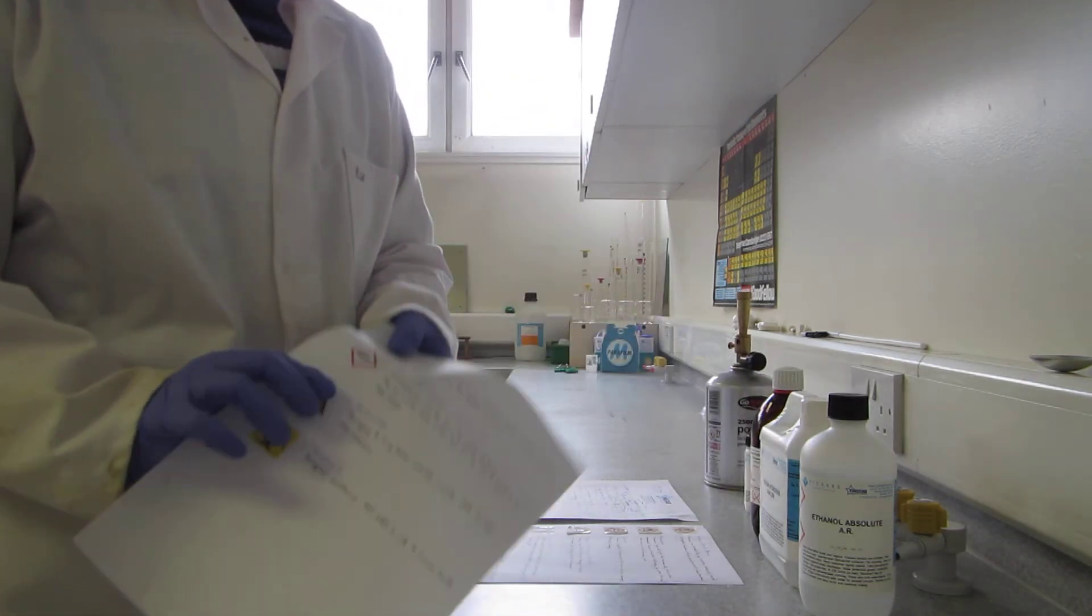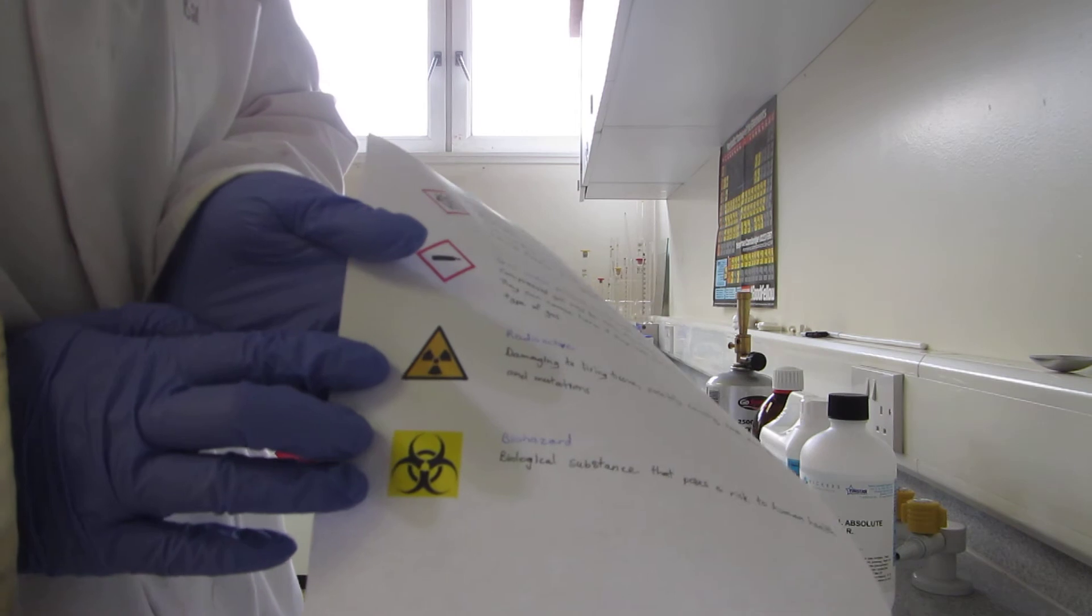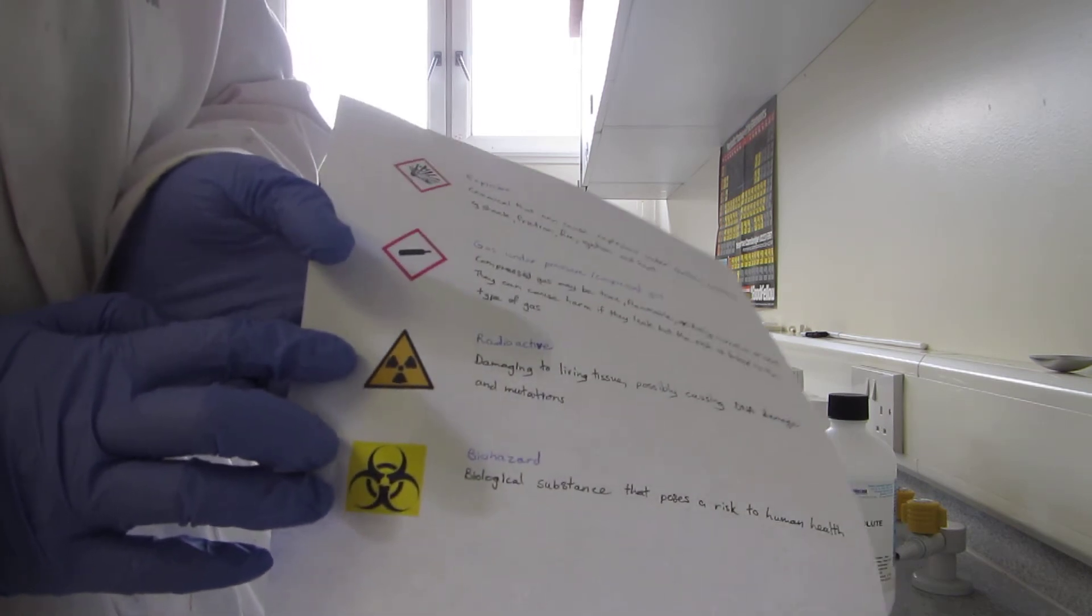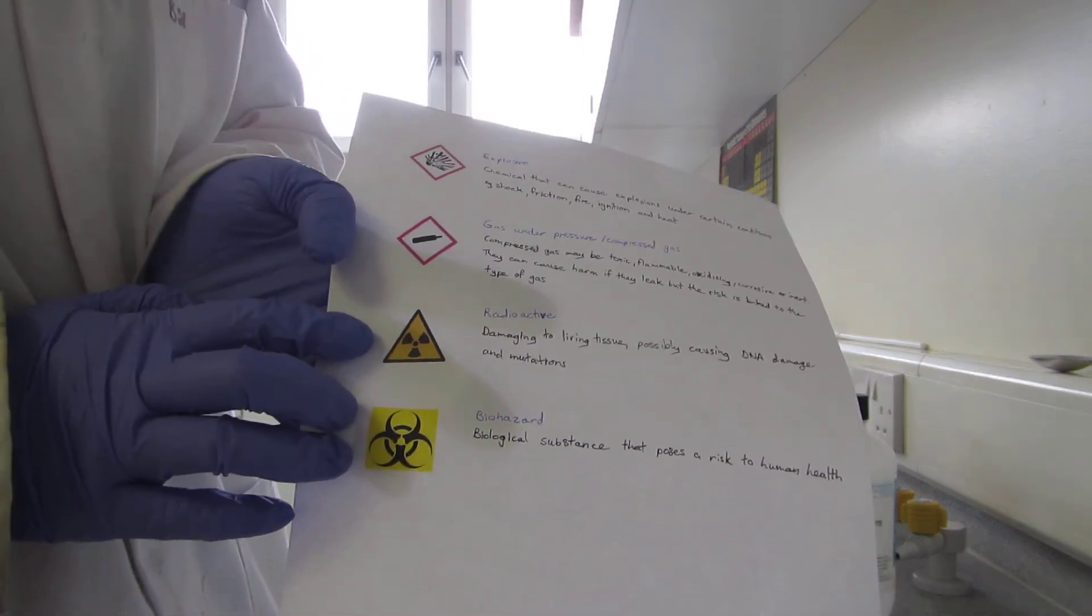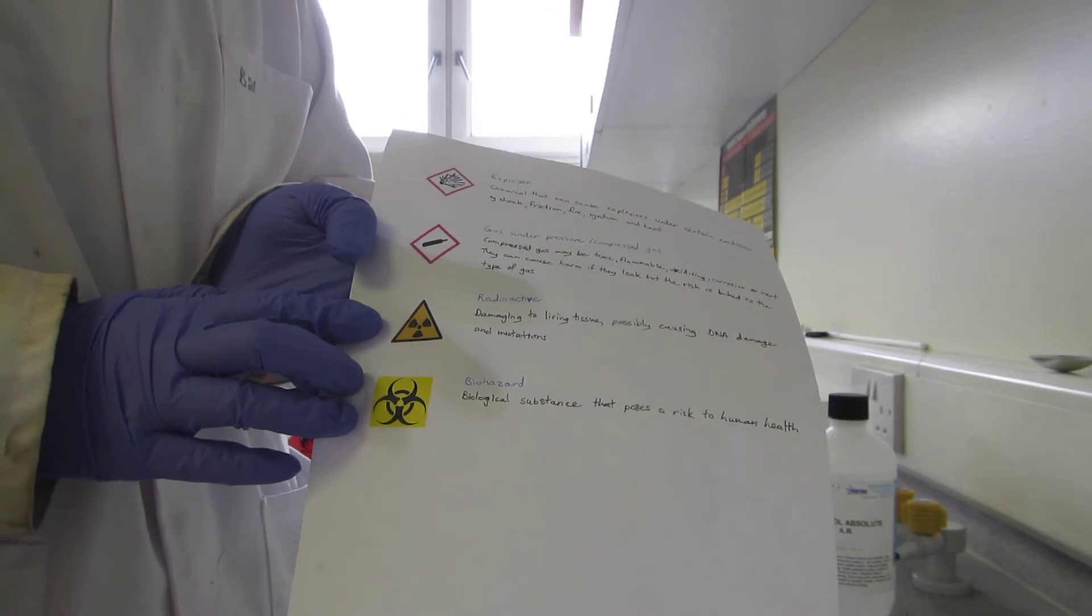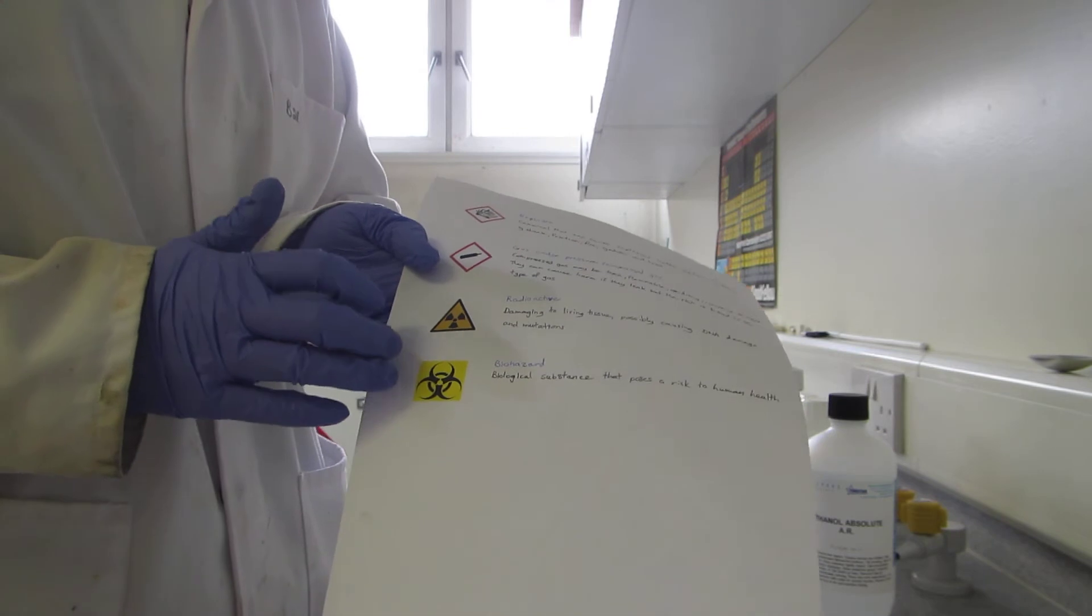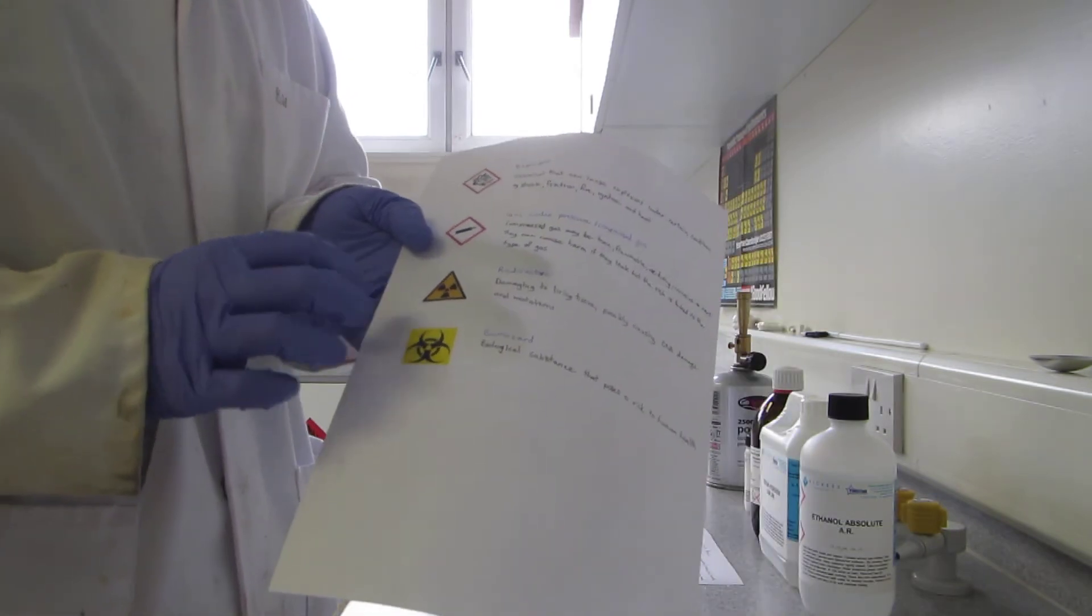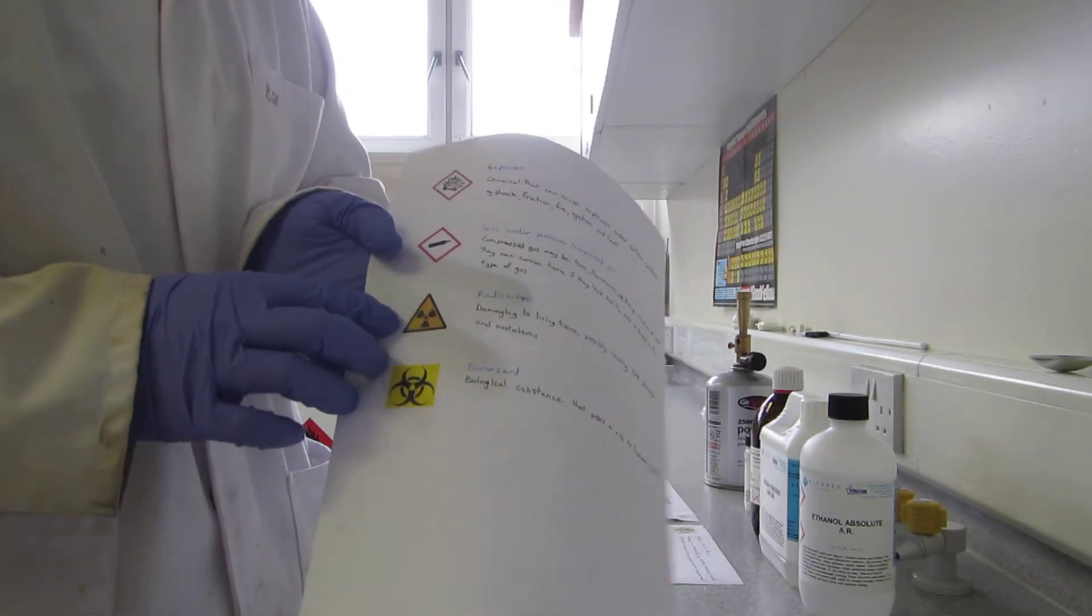The next symbol is for radioactive substances. This is anything that can cause damage to living tissue and potential DNA mutation. You would find it on gamma or beta sources of radiation. Again, because of the hazards associated with this, you generally only see them as a demonstration.